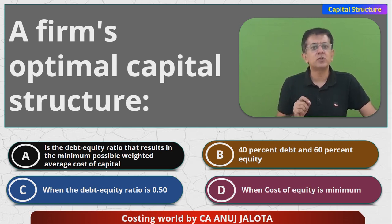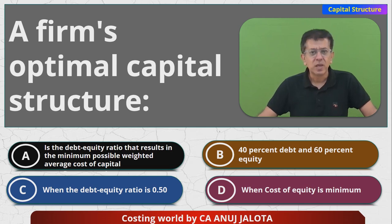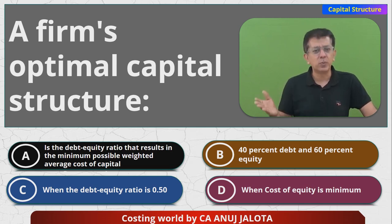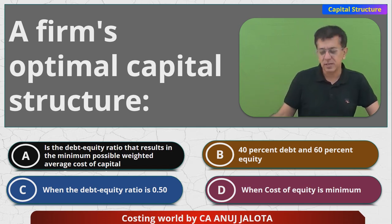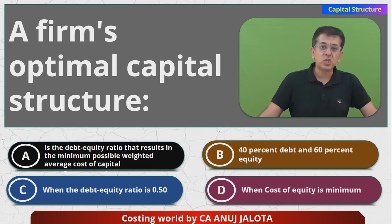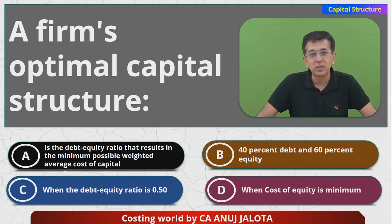We often say that capital structure is best wherever your KO — KO means overall cost of capital — is least. We are only interested in debt and equity, because all these theories had assumed that there is no preference shares. So therefore, there is no concept of preference in all these theories. Whichever combination of debt and equity results in the least possible KO, that particular capital structure is best.